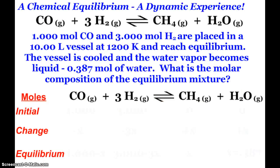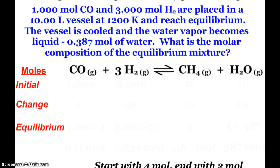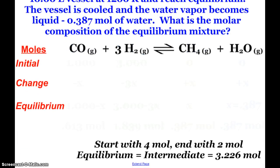So how does this look mathematically? Well, here's my reaction and the same information that was given to me. But I say at equilibrium, I cool the vessel down and I get 0.387 moles of water to come out. So I want to know, what is the molar composition of the equilibrium mixture? And so I'm going to set up an ICE table. We're going to use this a lot with equilibriums. This is Initial, Change, and Equilibrium.